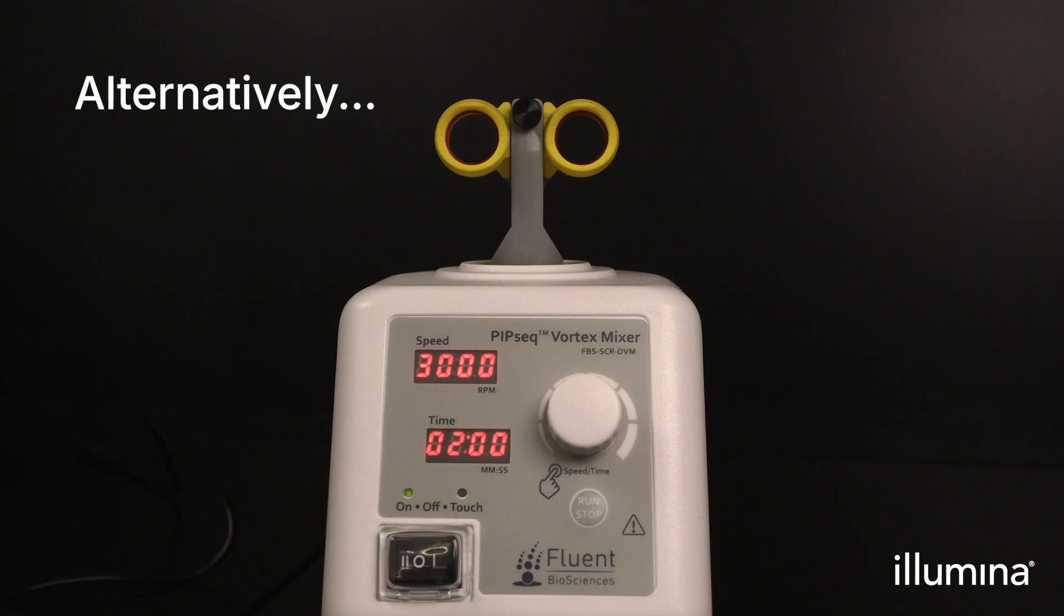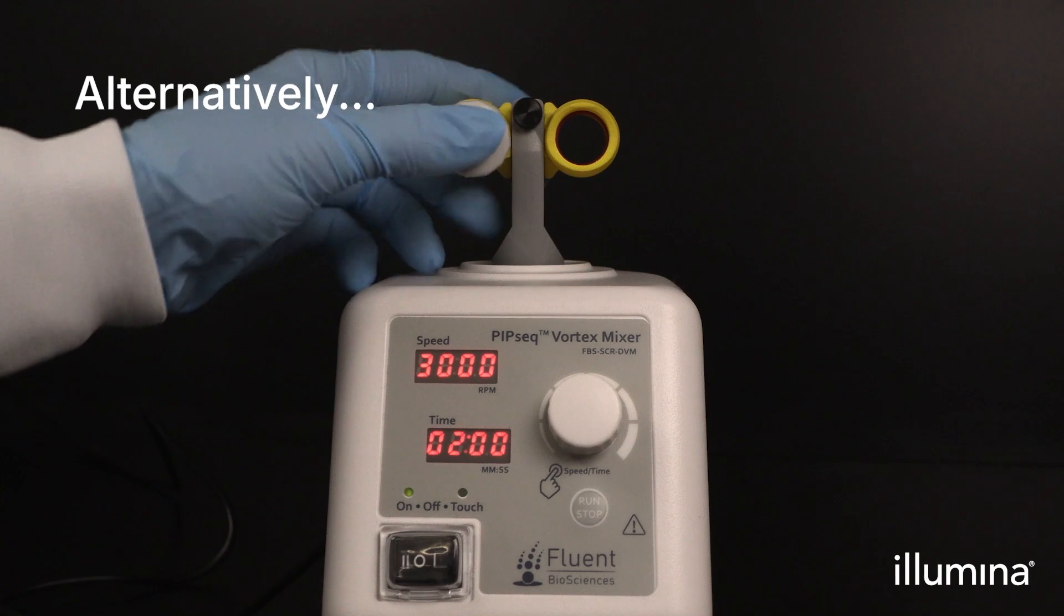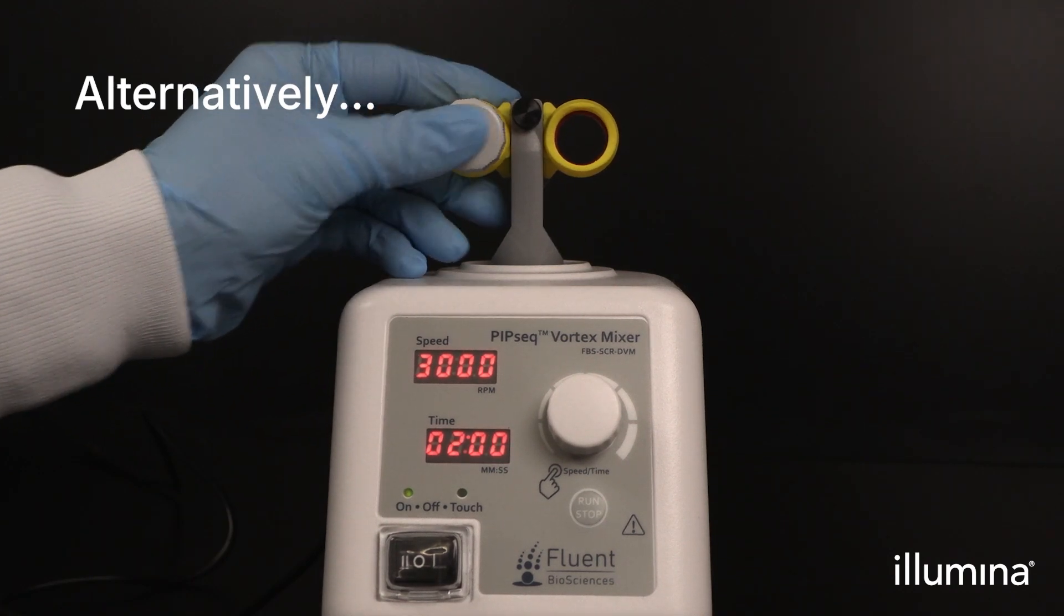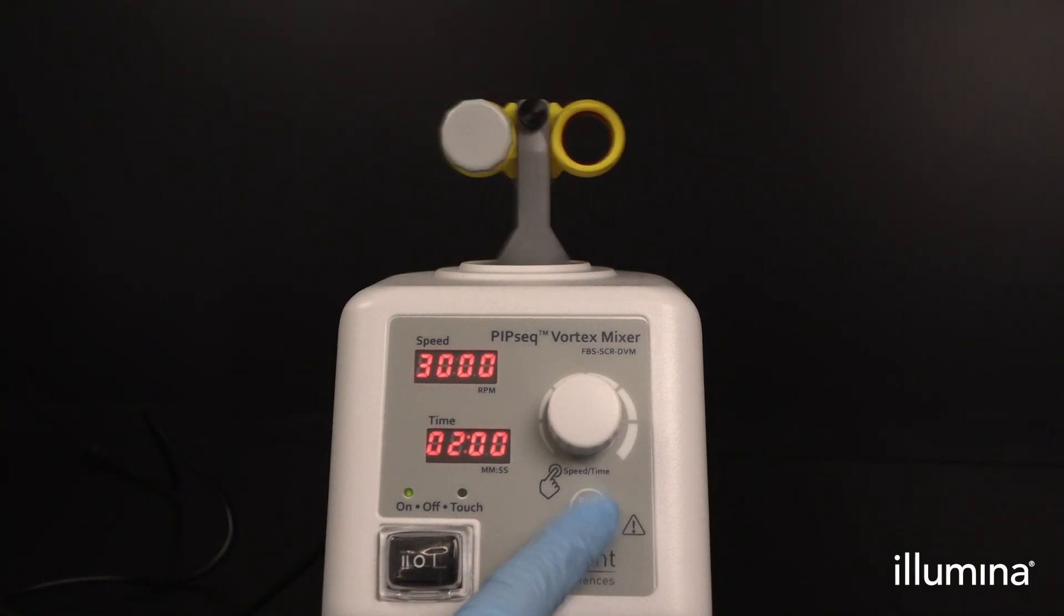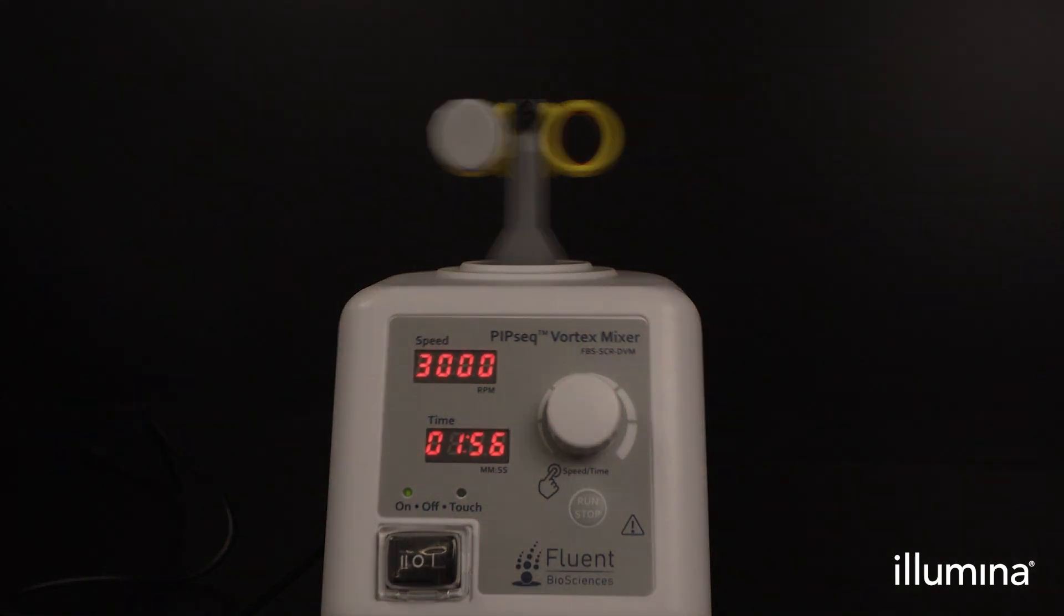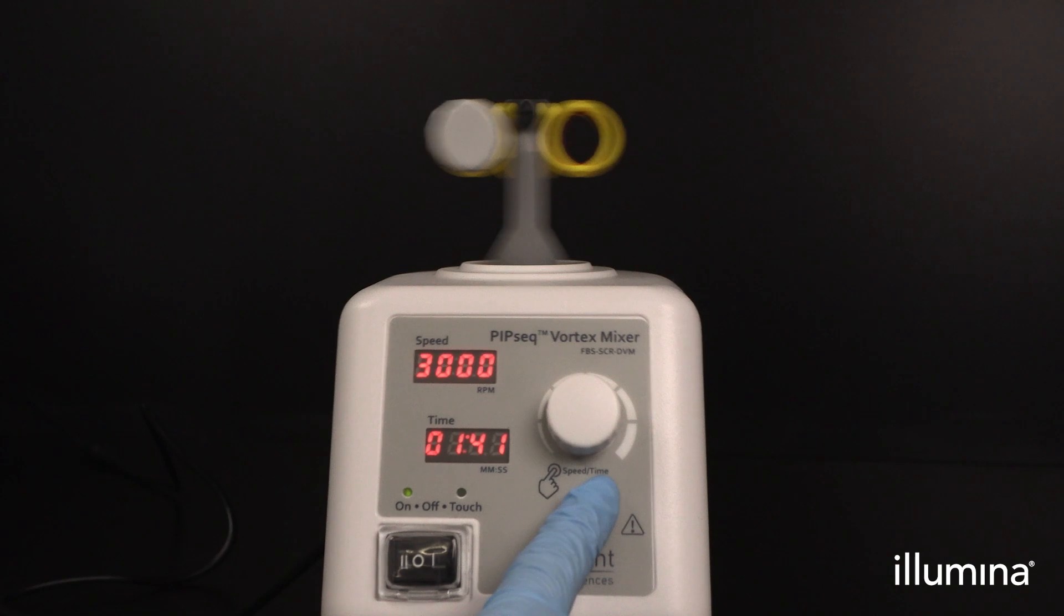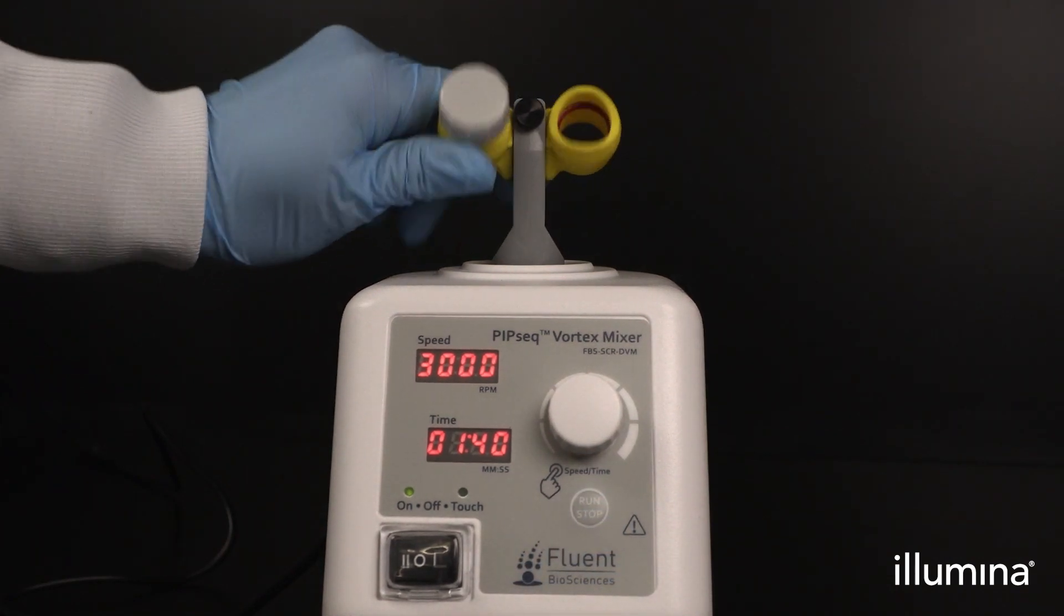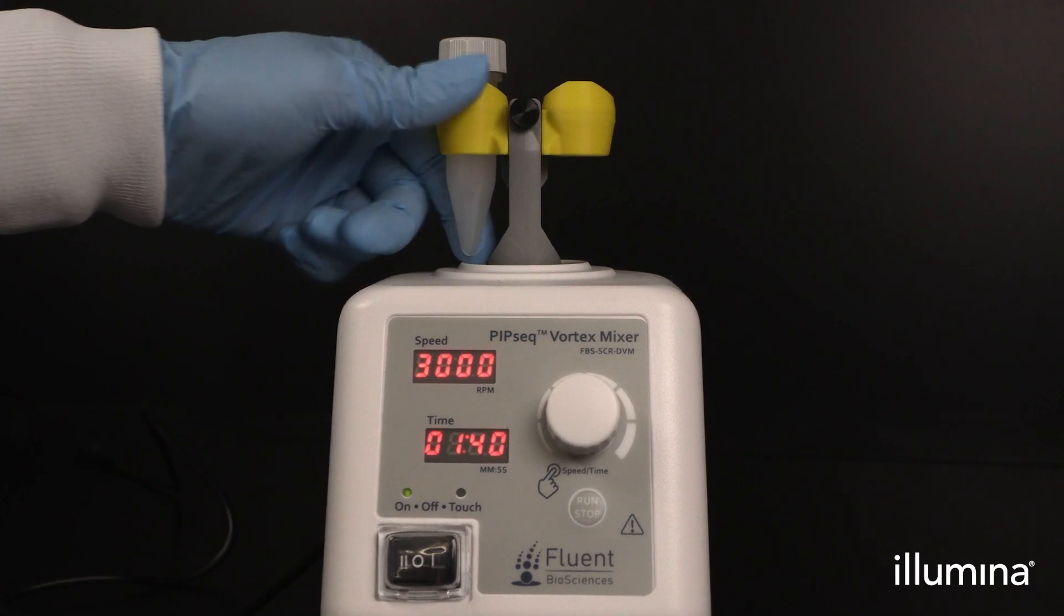For an easier transition between vortexing steps, we recommend starting the timer at 2 minutes and stopping the vortexer with 1 minute and 40 seconds remaining, or after 20 seconds of vortexing horizontally. Rotate the vortex head into the vertical configuration and hit the start button to vortex vertically for 2 minutes.